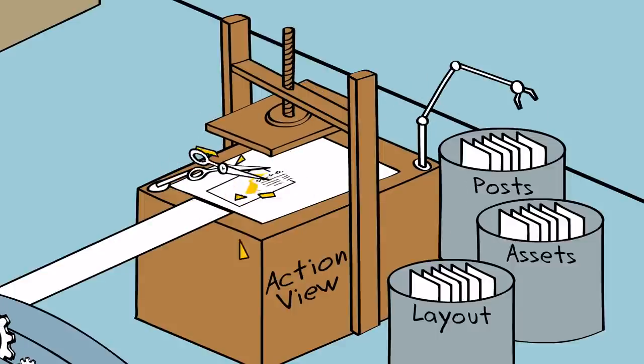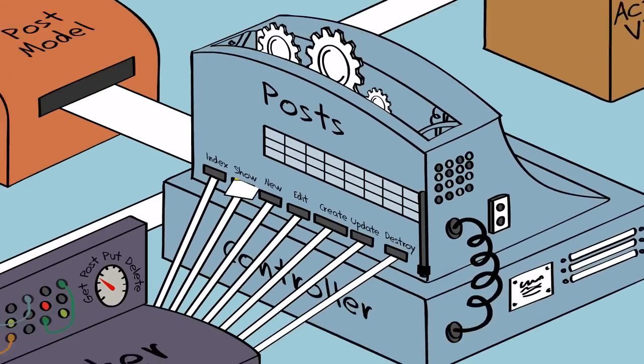The blog machine sends this new post hot off the press back to the user. Everyone else connected to the intertubes can also view this post.